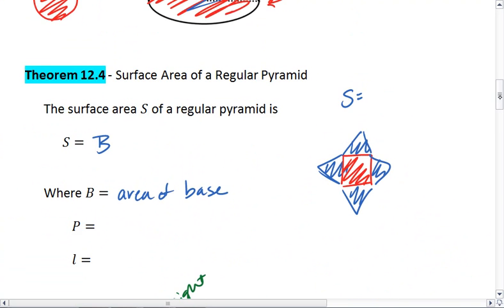Thus, I can account for all of the triangular faces at once by adding one half times the perimeter times the slant height. So here, p is the perimeter of the base, and l is the slant height.